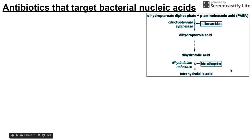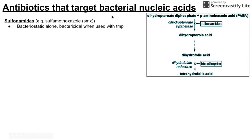The first two antibiotic classes we're going to talk about inhibit the pathway that makes tetrahydrofolate, and the first one is sulfonamides. Sulfonamides are a class of antibiotics that are bacteriostatic when used alone, or bactericidal when used with another class of antibiotics that we'll get into in a bit. One example of sulfonamides is sulfamethoxazole, abbreviated SMX.